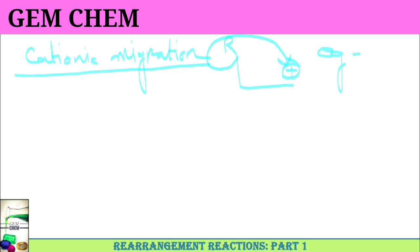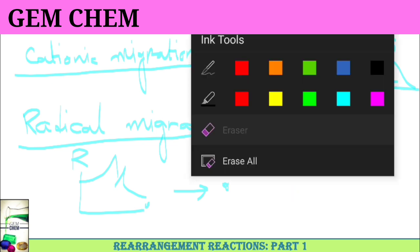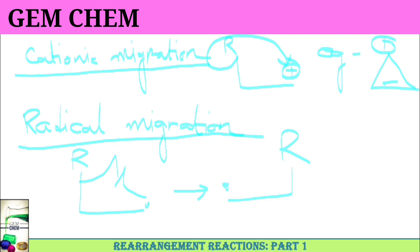For radical migration, there will be migration with only one electron. You have a radical center and R here. One of the electrons will be donated and this will come here. What you get is a dot here and a bond here which is this one. This will look like this.